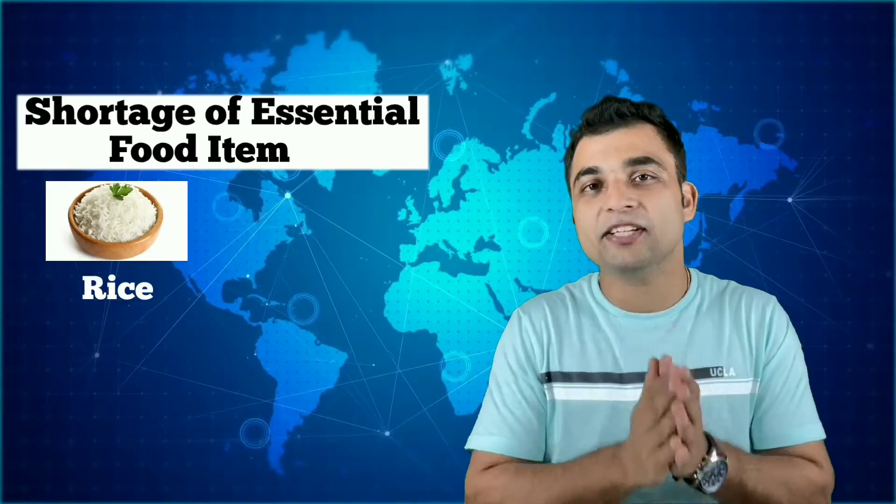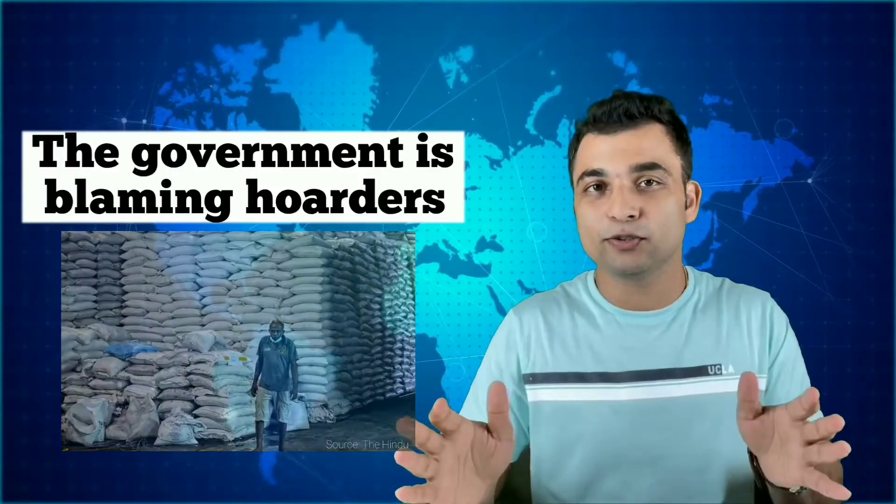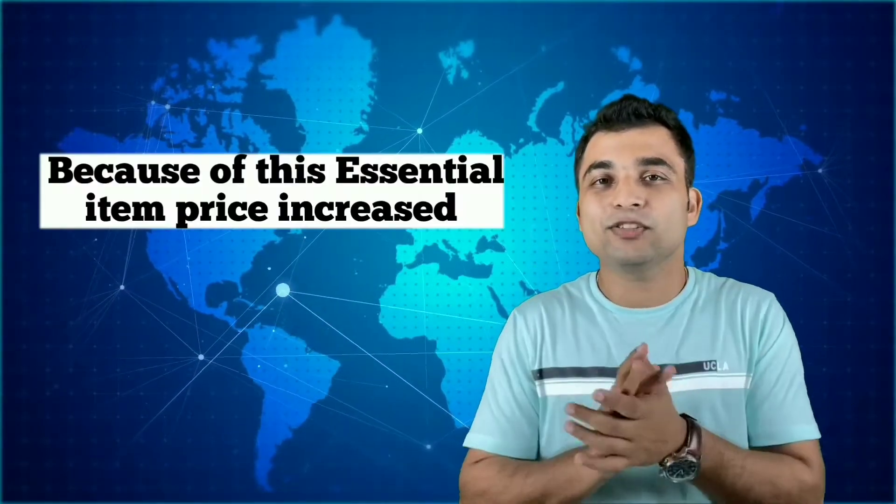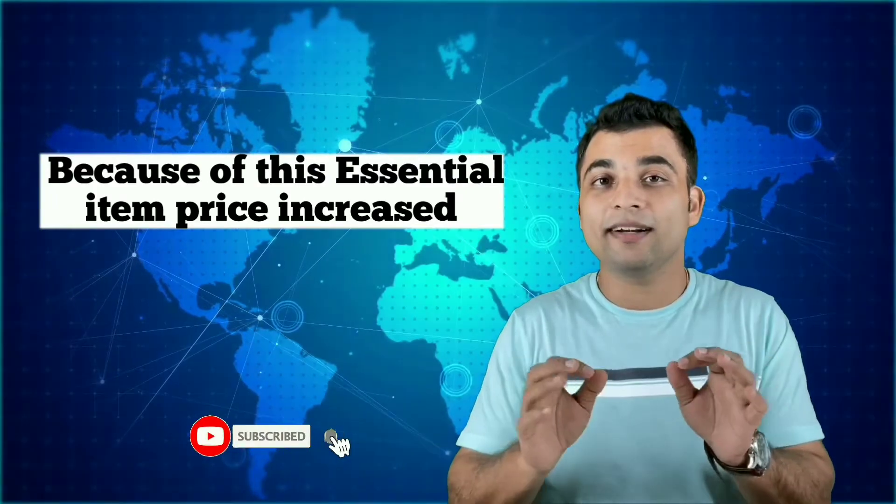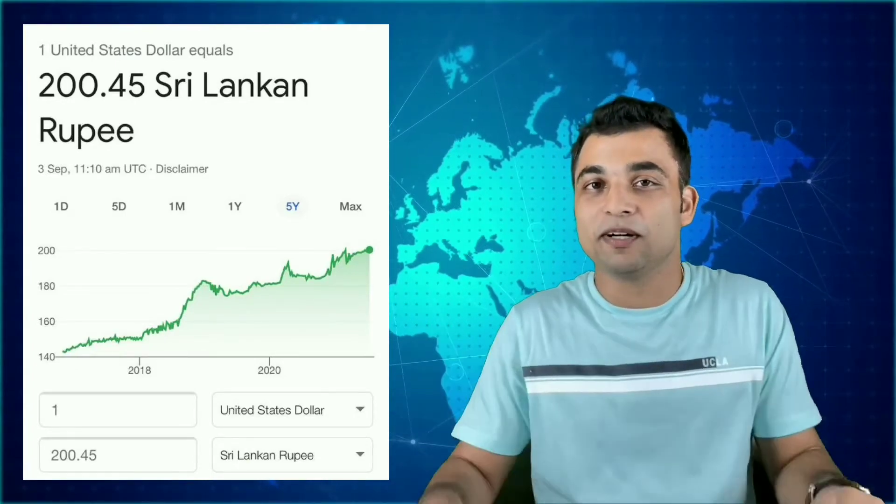There has been acute shortage of essential food items like rice, sugar, edible oil and many more, and the government has blamed the hoarders for doing so. Because of which the prices of the essential items have skyrocketed. And more importantly, the Sri Lankan rupee has come down drastically from around 160 rupees to 230 rupees per dollar.